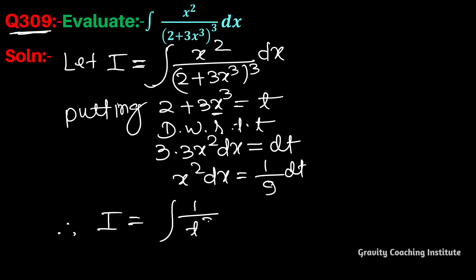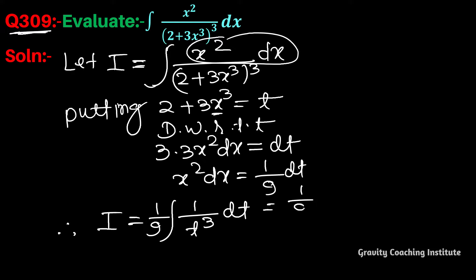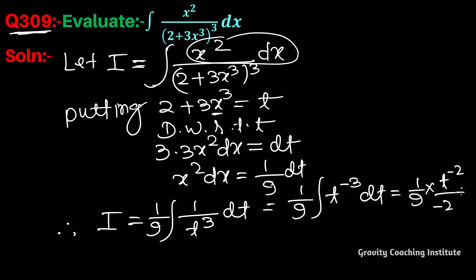This becomes integration of t to the power minus 2 multiplied by 1 by 9, which gives minus t to the power minus 2 divided by minus 2, plus c. This simplifies to minus 1 by 18t squared plus c.